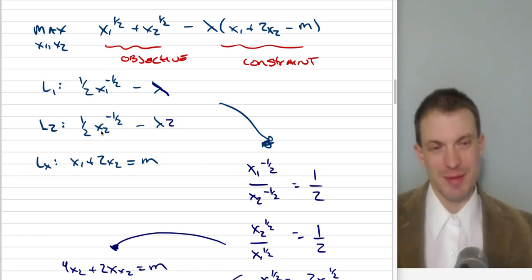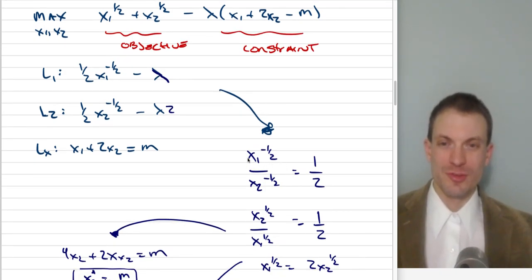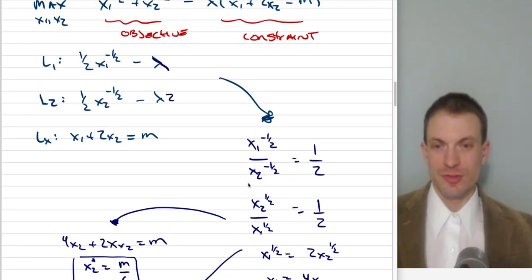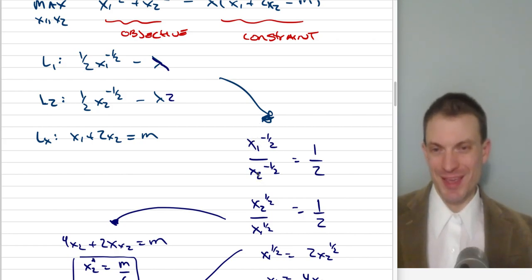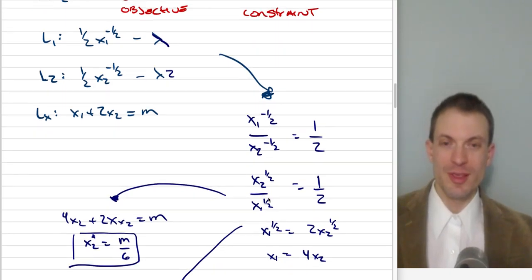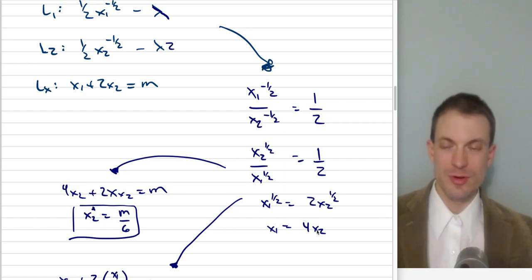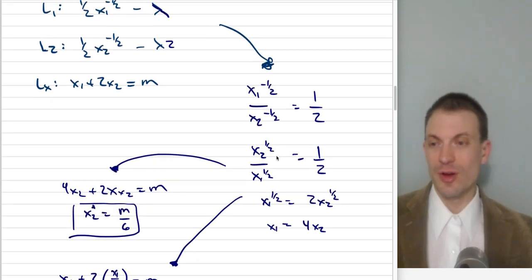You could solve either FOC for lambda and set them equal. Skipping to the result, we get x₁ to the minus one-half over x₂ to the minus one-half equals one-half. Using exponent rules, a negative exponent in the numerator is the same base in the denominator, so we can flip and solve: x₁ equals 4x₂. This is our tangency condition, which we now plug into the budget constraint.